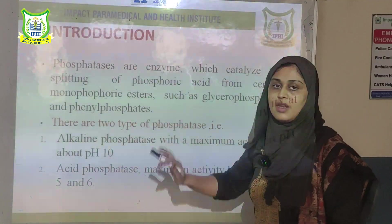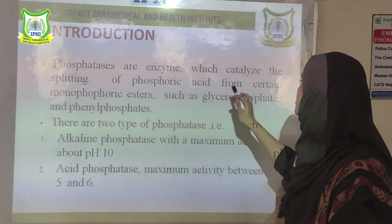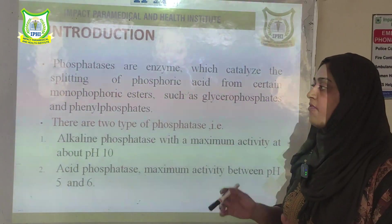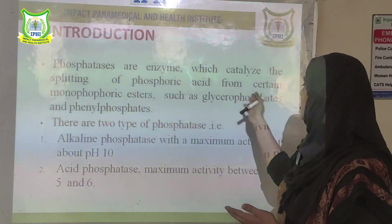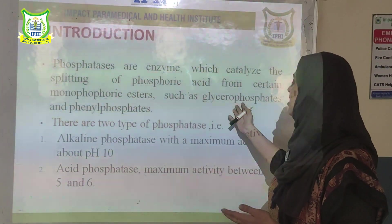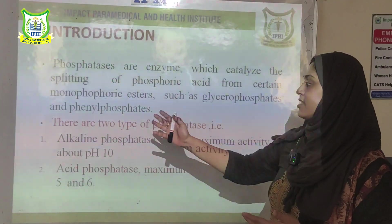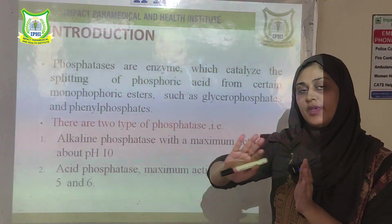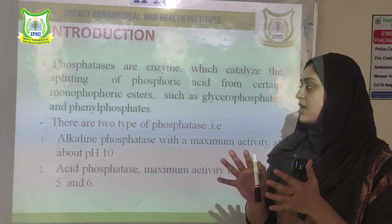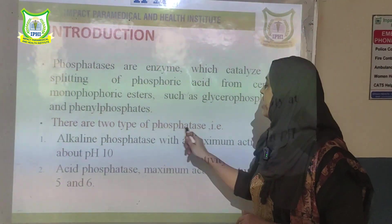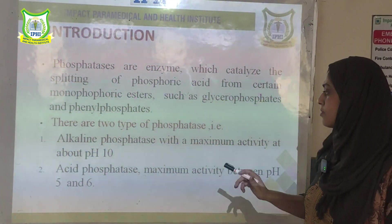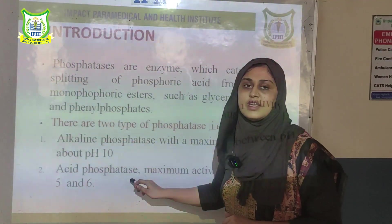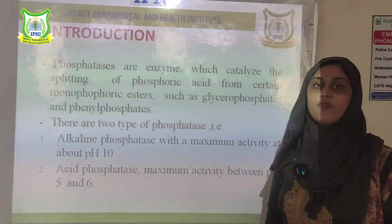Phosphatases are enzymes which catalyze the splitting of phosphoric acid from substrates like glycerophosphates and phenyl phosphates. The main focus is to remove the phosphate group from the given substrates. There are two types of phosphatases: alkaline phosphatases and acid phosphatases.